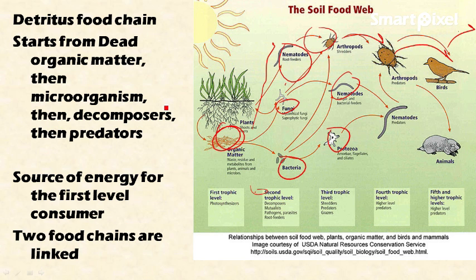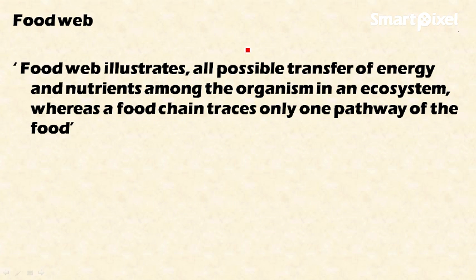These two food chains are interrelated. After living plants and animals die, they become dead and decayed organic matter, linking the grazing and detritus food chains. The next important concept is the food web. The food web illustrates all the possible transfer of energy and nutrients among the organisms in an ecosystem, whereas the food chain traces only one pathway.